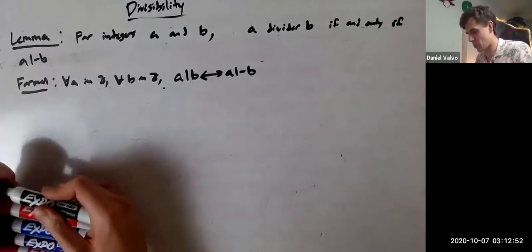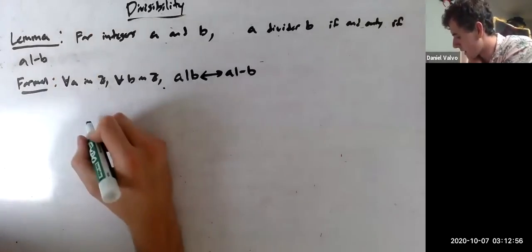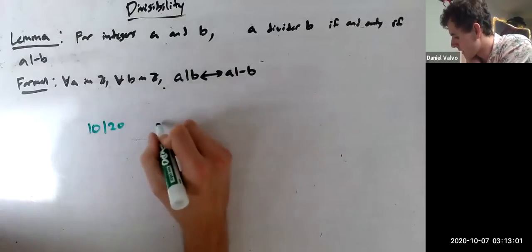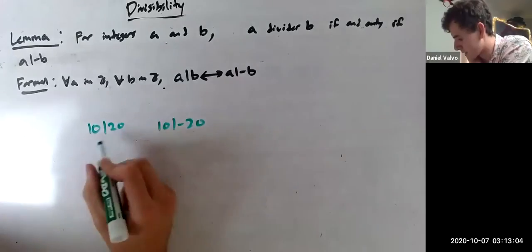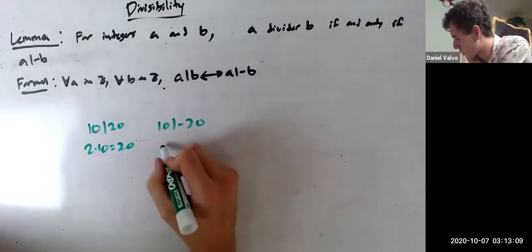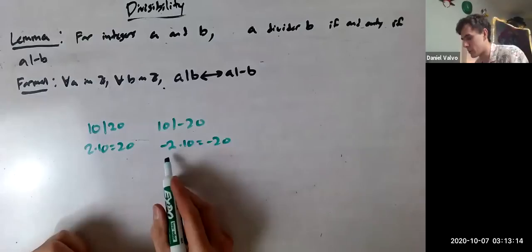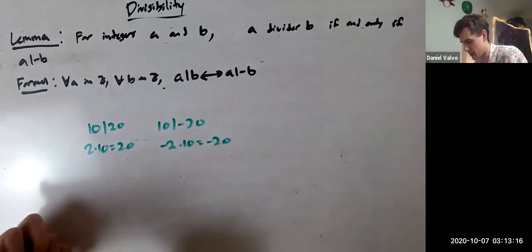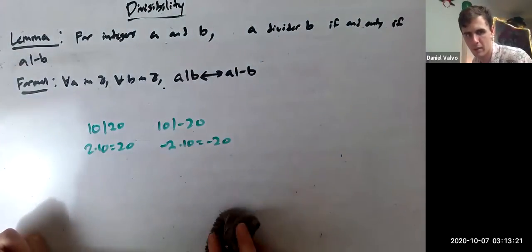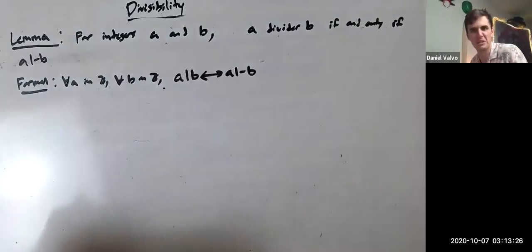And I think we can kind of see why, right? Like think about it. 10 divides 20 and 10 also divides negative 20. Why does it divide 20? Because 2 times 10 equals 20. Why does it divide negative 20? Because negative 2 times 10 equals negative 20. You just make the multiplier negative and you get the proof.